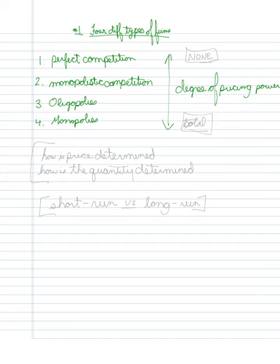With the extremes being that there is no pricing power here and total pricing power here. Monopolistic competition and oligopolies have slightly less or slightly more pricing power respectively.